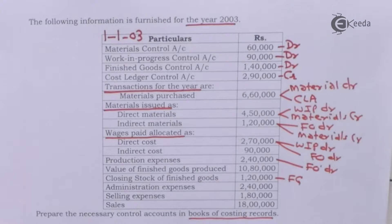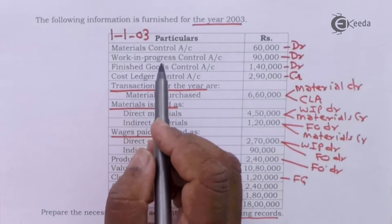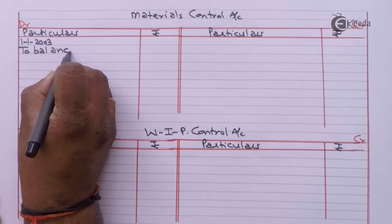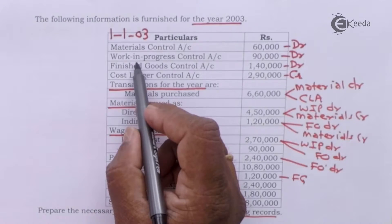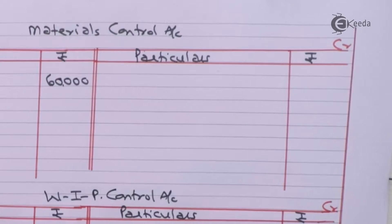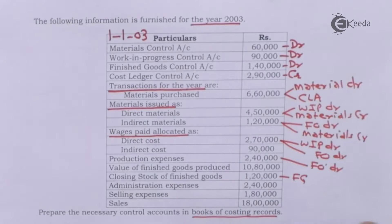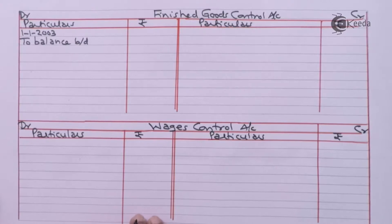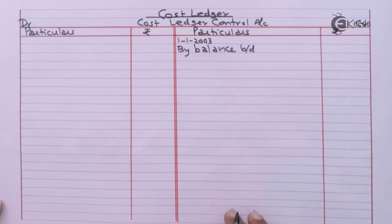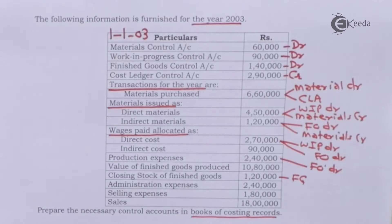We have opened all necessary ledger accounts. Let us start posting. We will record the opening balances first. Material Control Account: 60,000. Work in Progress Control Account: 90,000 — recorded as opening debit balance. Finished Goods Control Account: 1,40,000 — opening debit balance, to balance brought down 1,40,000. Cost Ledger Control Account: 2,90,000 — opening credit balance. We have recorded all opening debit and credit balances.